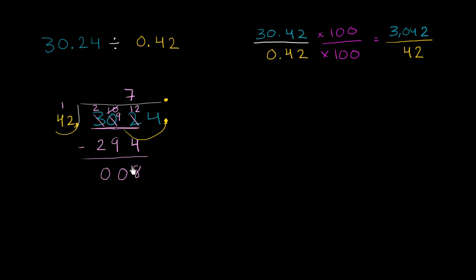So what I got left over is less than 42. So I know that 7 is the right number. I want to go as many times as possible into 302 without going over. So now let's bring down the next digit. Let's bring down this 4 over here. How many times does 42 go into 84? Well, that jumps out at you or hopefully it goes two times. 2 times 2 is 4. 2 times 4 is 8. You subtract, and we have no remainder.